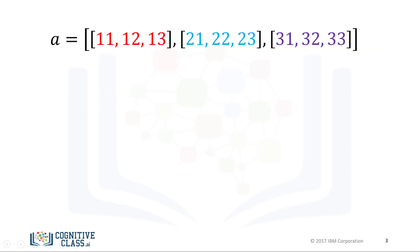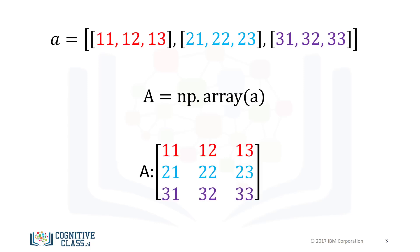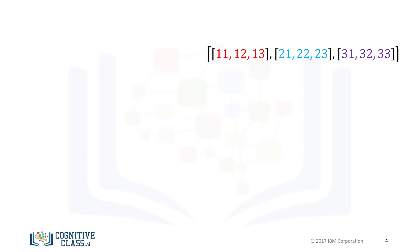Consider the list A. The list contains three nested lists, each of equal size. Each list is color-coded for simplicity. We can cast the list to a NumPy array as follows. It is helpful to visualize the NumPy array as a rectangular array. Each nested list corresponds to a different row of the matrix. We can use the attribute Ndim to obtain the number of axes or dimensions, referred to as the rank. The term rank does not refer to the number of linearly independent columns like a matrix. It is useful to think of Ndim as the number of nested lists.